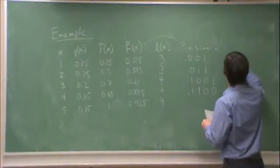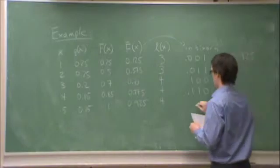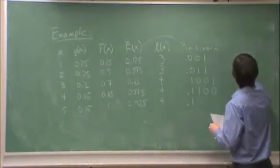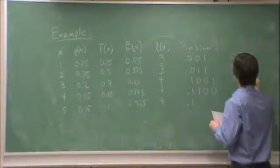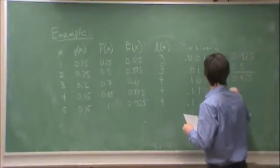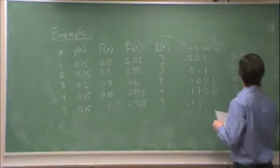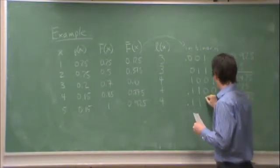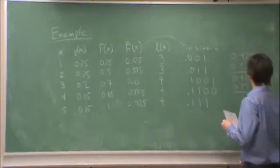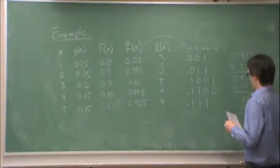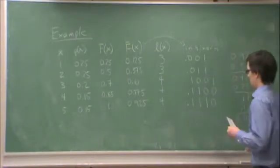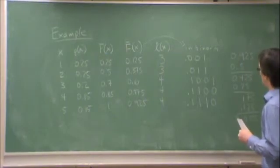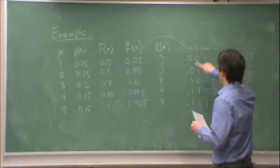Finally, 0.15. I have 0.5, 0.25, 0.125, and no 0.0625. So those are my four bits there - these are my code words.